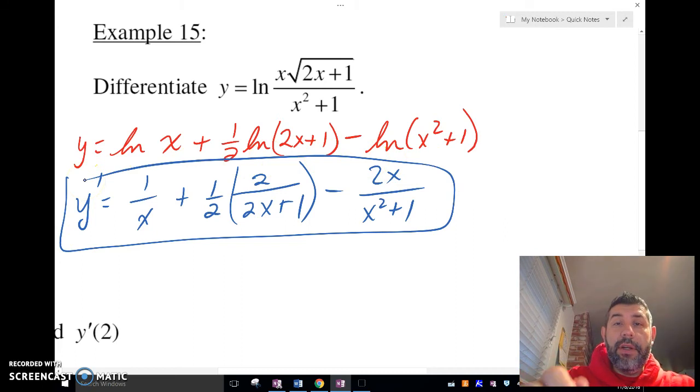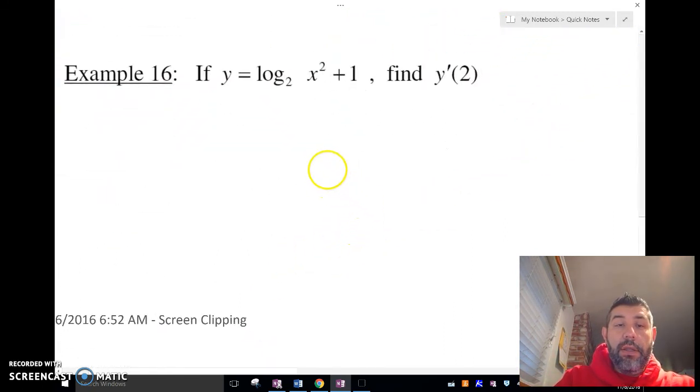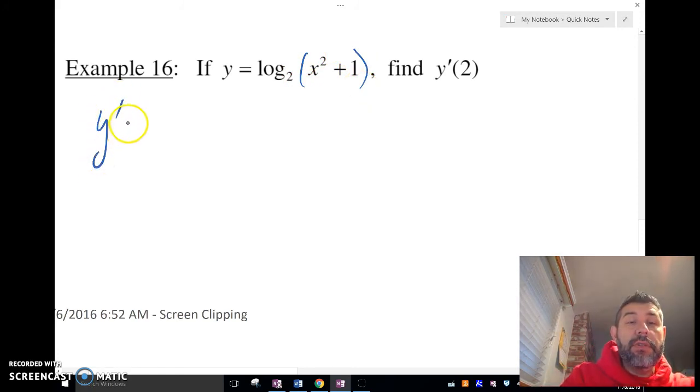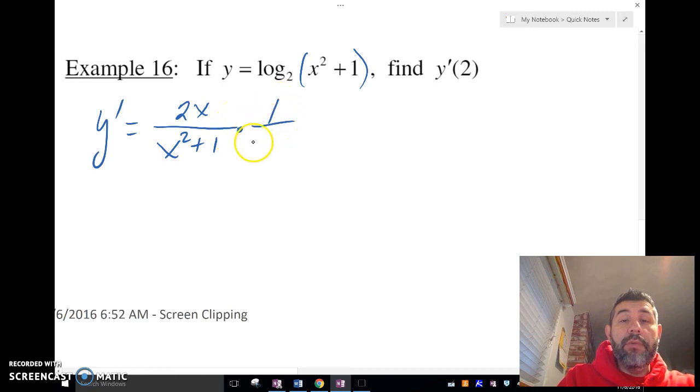Let's take a look at one last example here. If y equals log base 2 of x squared plus 1, let me put that in parentheses, find y prime of 2. First we need to find the derivative, so let's go and do that. We're going to have the derivative of the inside over the inside, but this is a log base 2, so we've got to multiply it by 1 over ln of 2. Anytime we have a different log base, we've got to remember that we need to divide it by ln 2, or multiply 1 over ln of whatever this base is right here.